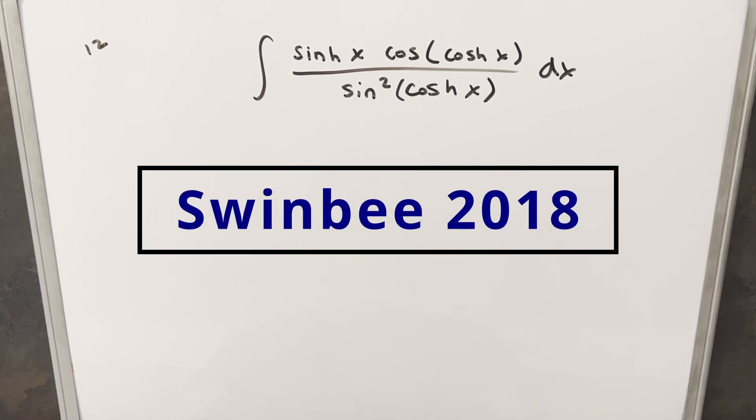Okay, we have here today an interesting integral from Swinbee 2018. This was problem 12. We have the integral of sinh x times cos(cosh x) over sin²(cosh x) dx.